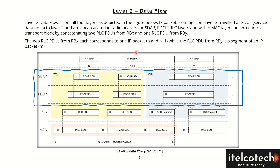IP packets coming from the upper layer — in this case Layer 3 — are traveling as a service data unit to Layer 2, and are encapsulated in a radio bearer. Whatever data is coming in our IP packets from Layer 3 is then encapsulated in the radio bearers, which we can see here as an example of radio bearer X and radio bearer Y. In Layer 2, we'll see how the packets are being encapsulated inside these radio bearers as SDUs, which are service data units.